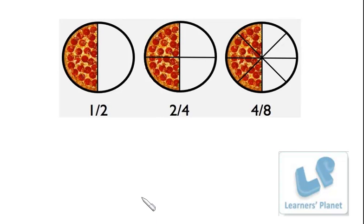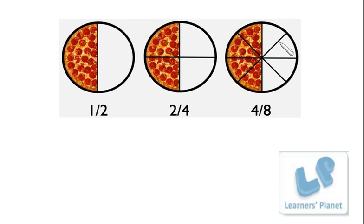Here you can see once again your portion is half. If half is cut into two equal pieces then out of four pieces your portion is two parts. And if this half is further cut into two more pieces each, then in all out of eight parts your portion is one, two, three, four parts. So this portion is equal to this portion. That means one by two is equal to two by four is equal to four by eight.